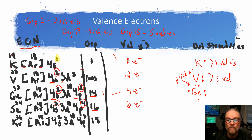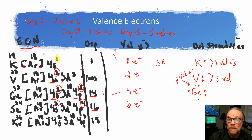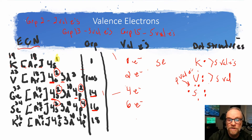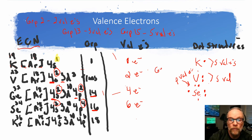Let me correct that — I was actually drawing selenium, which has six valence electrons, not germanium. So let me redo this: selenium has six valence electrons. Then germanium has four valence electrons, so the dot structure for germanium would be one, two, three, four dots placed around its symbol.